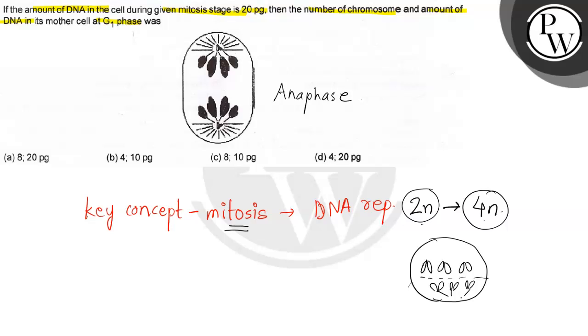When the membrane forms, this cell doesn't divide into two cells yet, so this cell still has 4N number - the chromosomes are still doubled. So here, the amount of DNA in the cell during the given mitosis stage is 20 picograms.